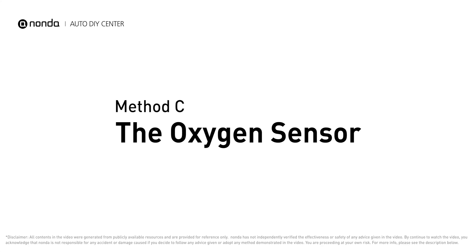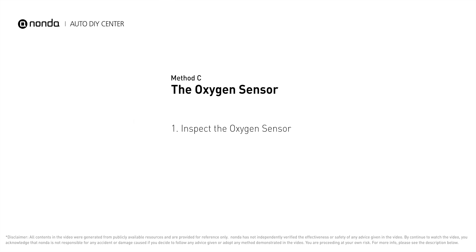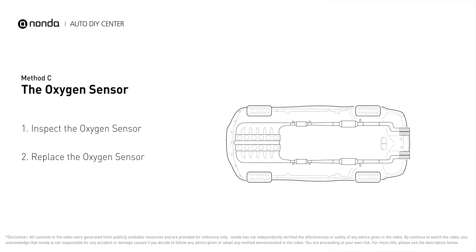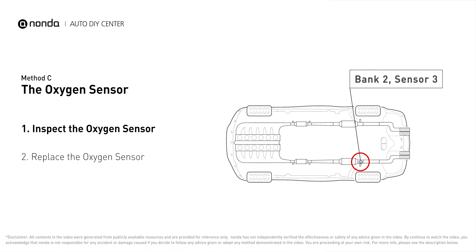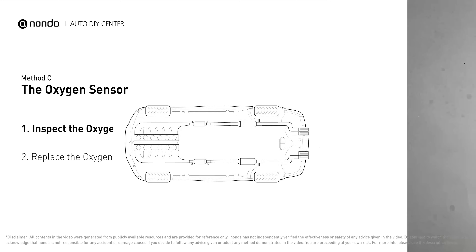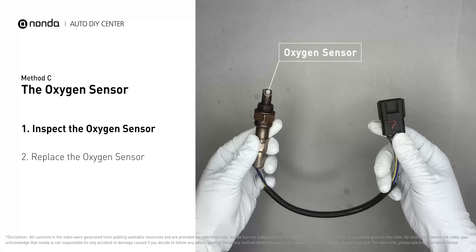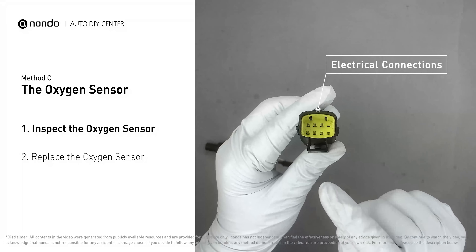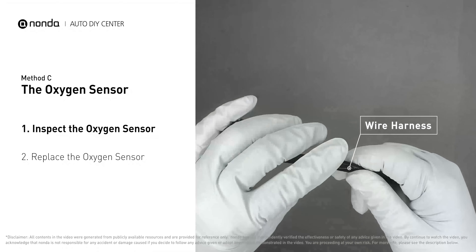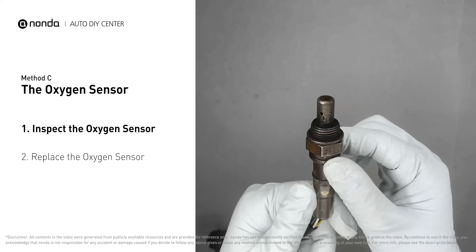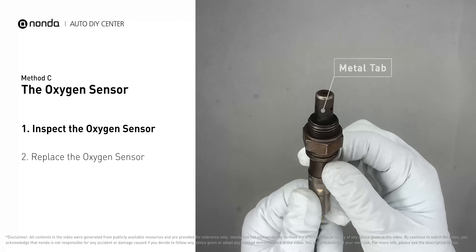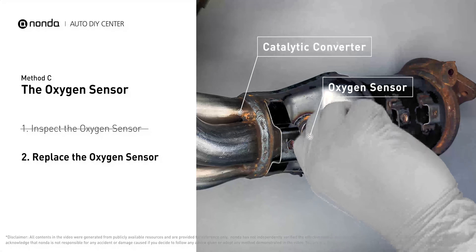Method C: The oxygen sensor. This oxygen sensor is located right after the catalytic converter. Bank 2 is on the side with cylinder number two; sensor number three is downstream of the last catalyst in the exhaust system. Visually check the oxygen sensor's electrical connections, wire harness, and metal tabs for any damages.